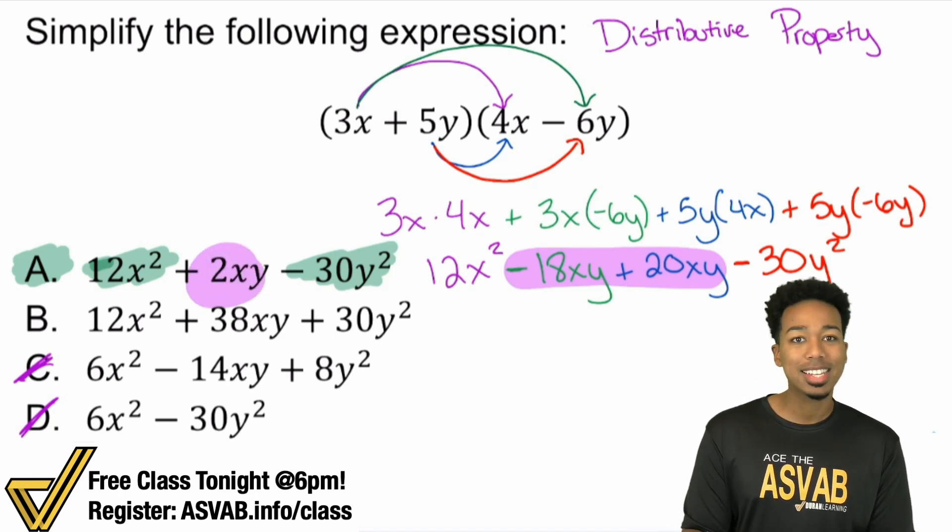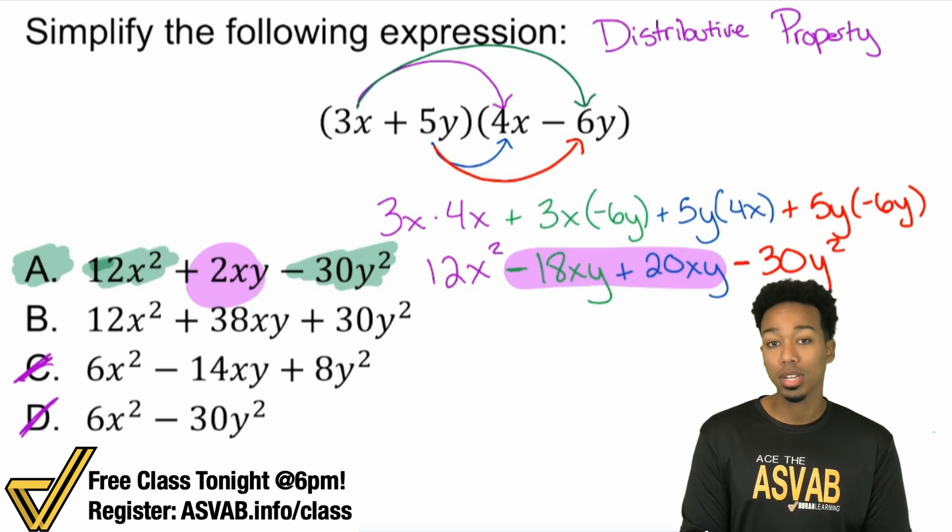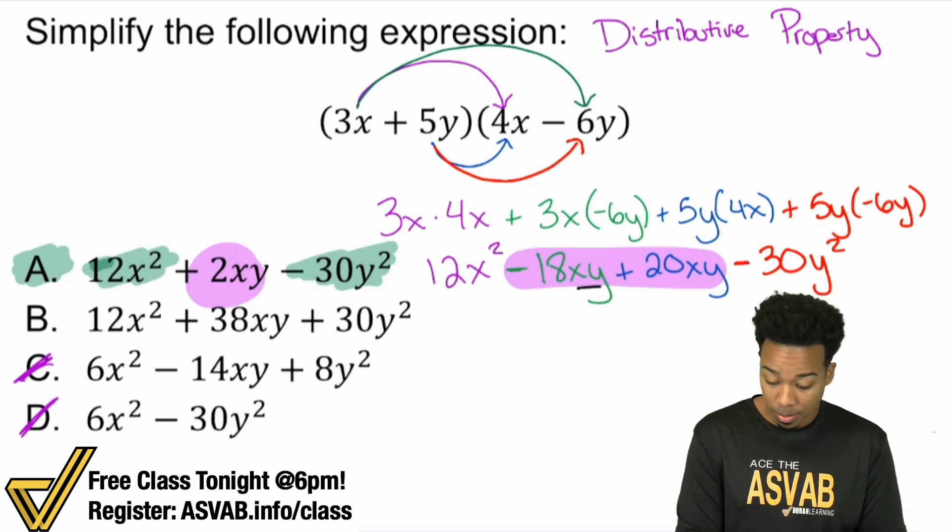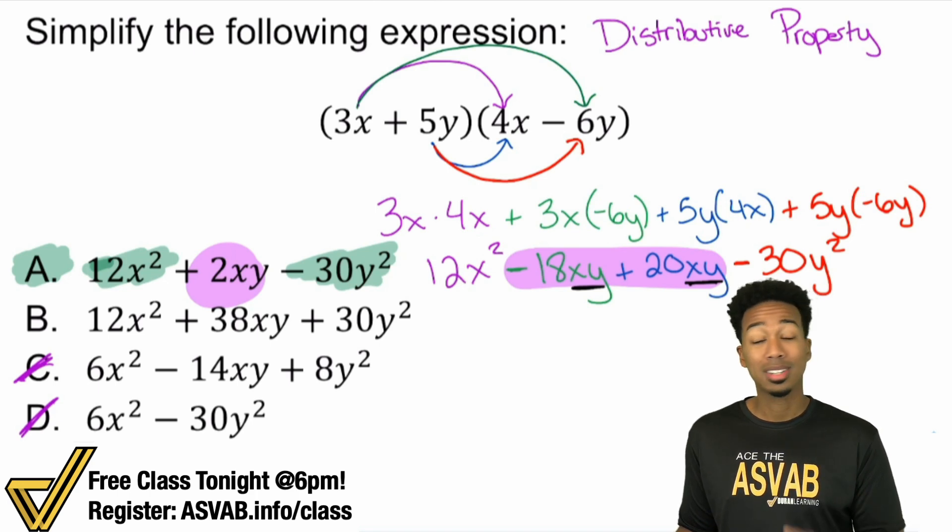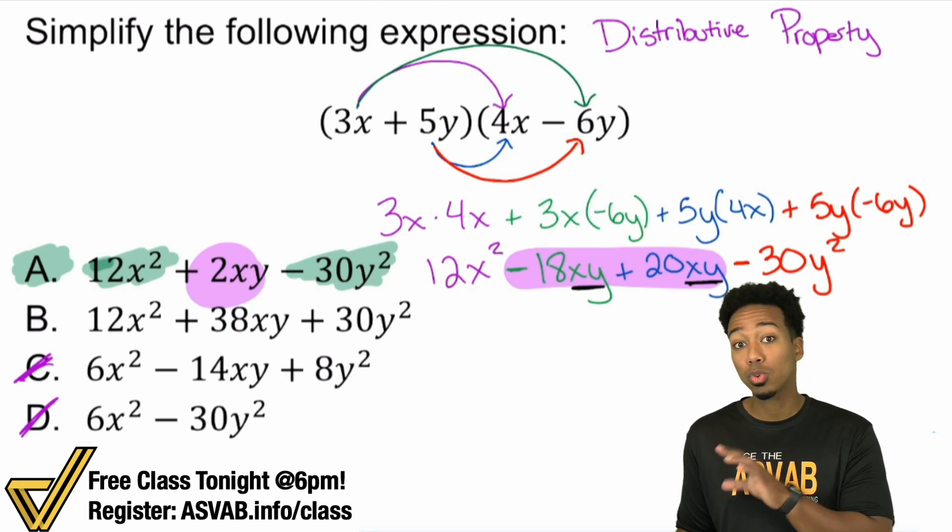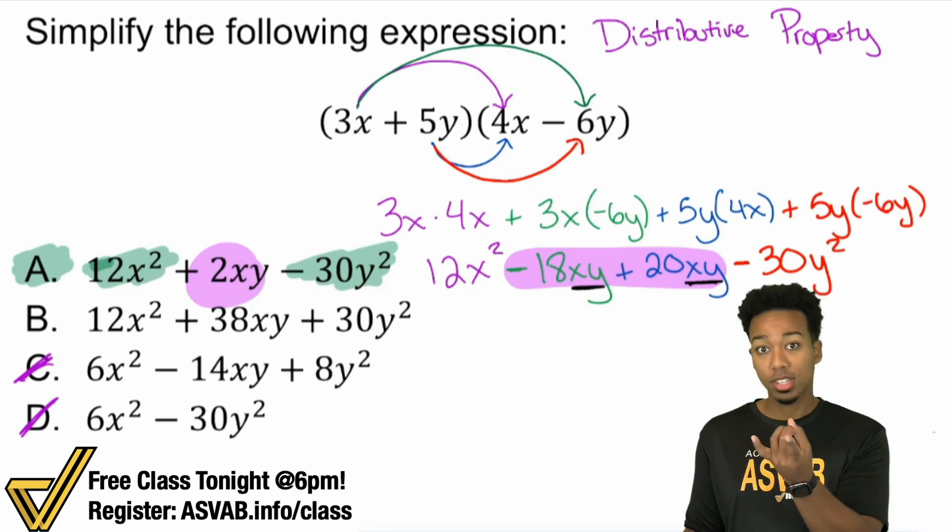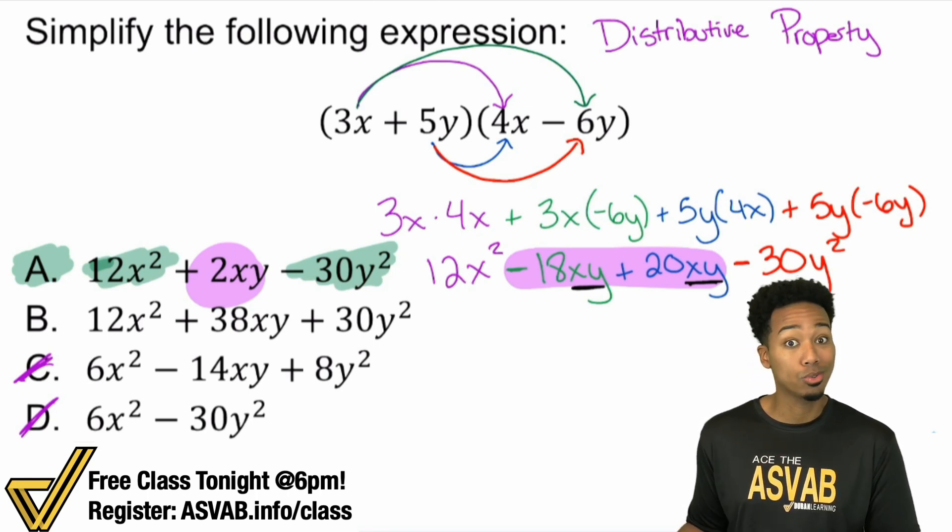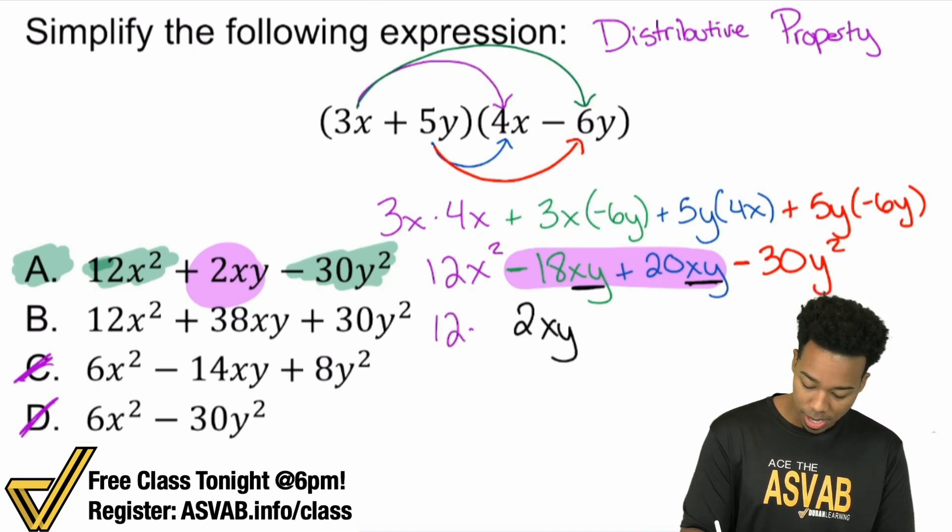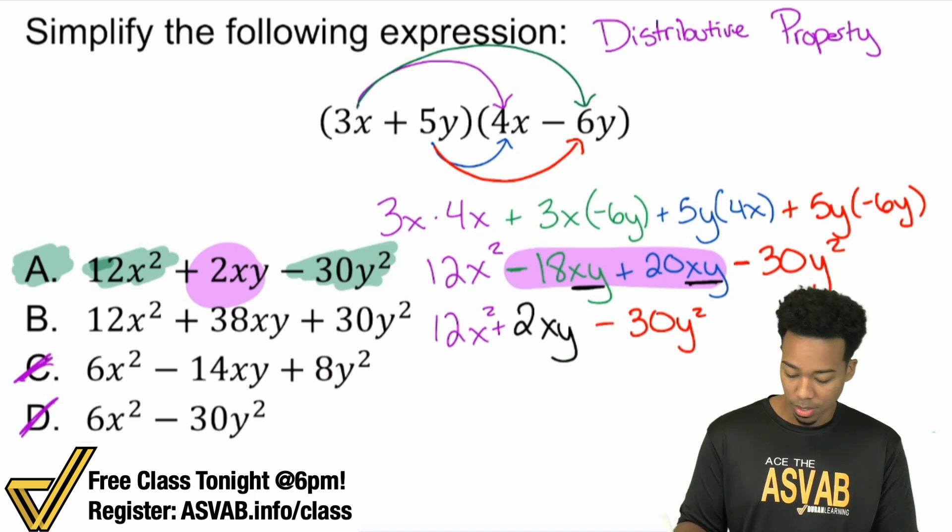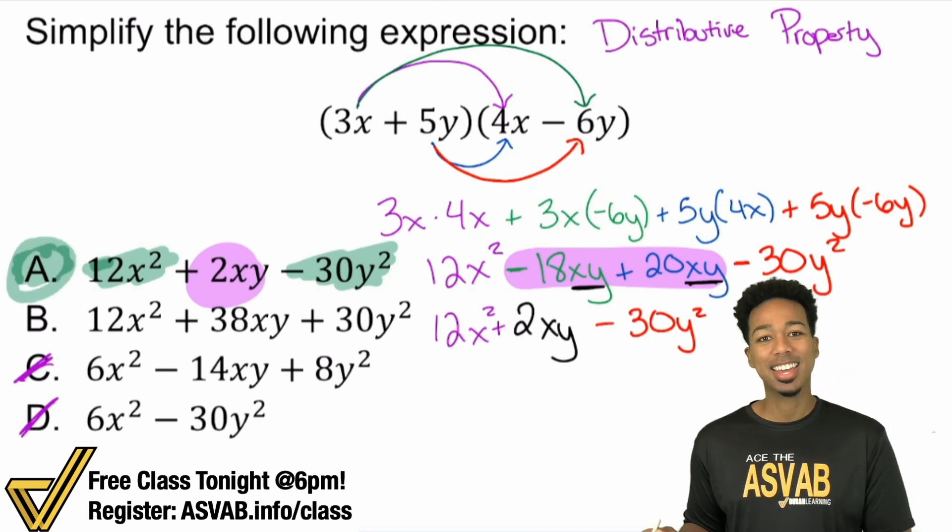Minus 18xy and plus 20xy. They're the same variables x and y so you can combine these terms. Which means you're just doing negative 18 plus 20. Negative 18 plus 20 is the same as 20 minus 18. Make sure to bring the signs with you. And so you're doing 20 minus 18 which is 2. So that'll be 2xy. And you can bring everything else down. 12x² plus 2xy minus 30y². And there my friends is the answer. That is A confirmed again.